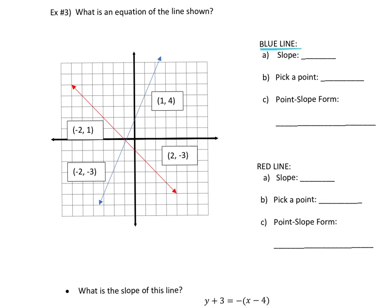For those with a hard copy: the blue line and the red line are shown. You're given two points on each line. For the blue line, the points are (1, 4) and (−2, −3). We're going to put that line into point-slope form.